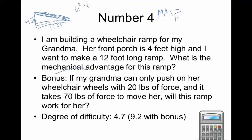To find the slant length, we use a² + b² = c². Here, a = 12, so a² = 144; b = 4, so b² = 16. That gives 144 + 16 = 160 = c². Taking the square root, the slant length is approximately 12.64 feet. Now, mechanical advantage of a ramp equals length divided by height: 12.64 feet divided by 4 feet equals 3.16.